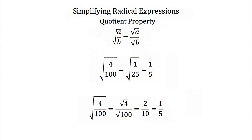Now the last method we're going to talk about is using the quotient property. The quotient property tells us that if we have the square root of a fraction a over b, that's equal to the square root of a over the square root of b. For example, the square root of 4 over 100 — I can simplify the fraction 4/100 into 1/25, and the square root of 1/25 is just 1/5. Or using the quotient property, the square root of 4 divided by the square root of 100 is 2 divided by 10, which is also 1/5.